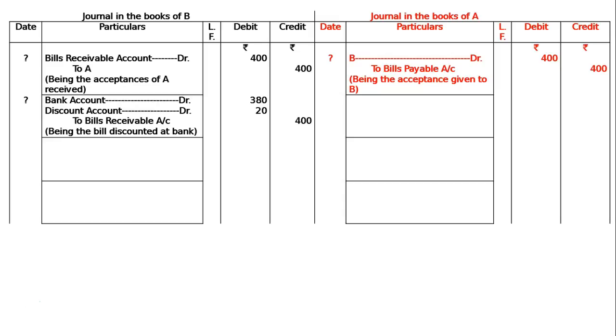There will be no entry in the books of A for the discounting transaction. At the due date, pass journal entries in the following cases.